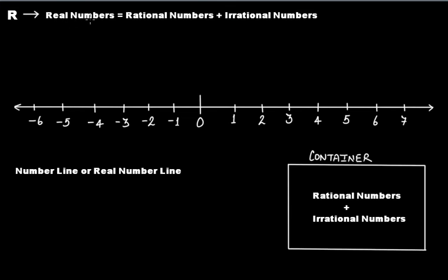The set of real numbers is represented by capital R. Real numbers, whether rational or irrational, can be represented on a number line. That's why the number line is sometimes called the real number line — because it contains both rational numbers and irrational numbers, and we know that the whole set of rational plus irrational numbers is called real numbers.